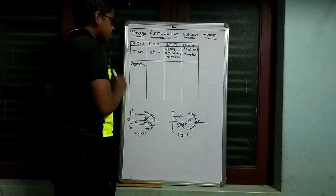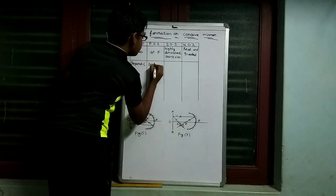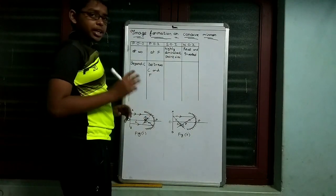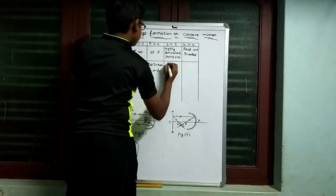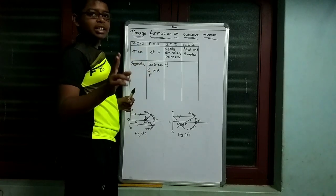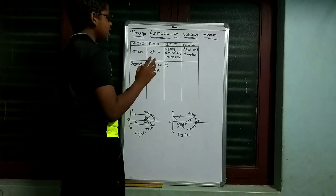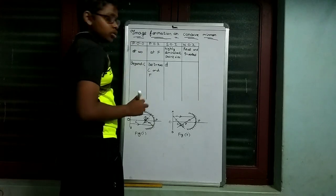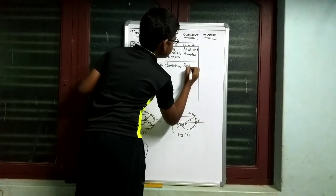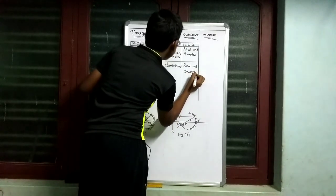So for object beyond C, the position of image is between C and F. The size of image is diminished — highly diminished. The nature of image is real and inverted. This completes figure 2.